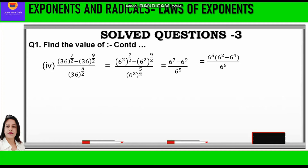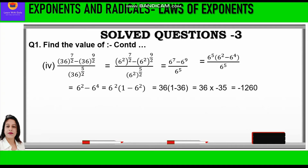Since 6 raised to power 5 is in both numerator and denominator, it cancels, and we are left with 6 square minus 6 raised to power 4. We can take 6 square common to get 6 square in bracket 1 minus 6 square. Now 6 square is 36, so we write 36 into bracket 1 minus 36. Now 1 minus 36 is minus 35, so 36 into minus 35 is equal to minus 1260.